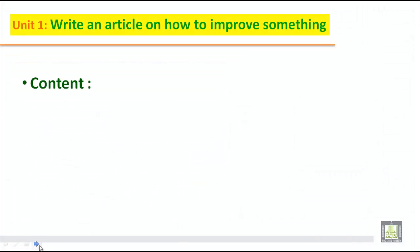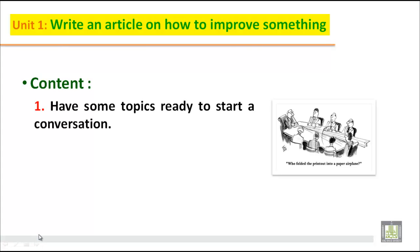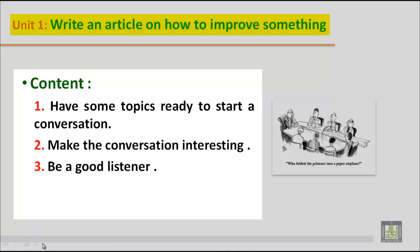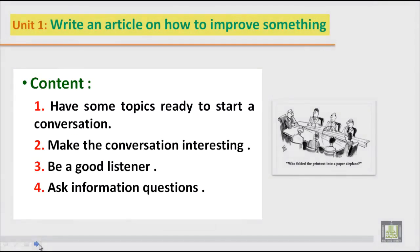And write a short article on how to improve conversational skill. As we discussed before in book one, we write an article for a magazine or a newspaper. In an article, we have some topics — the main idea or the topic sentence — and then we elaborate on it. For example, when writing an article on how to improve conversational skill, we can have these main points: have some topics ready to start a conversation, make the conversation interesting, be a good listener, ask information questions.